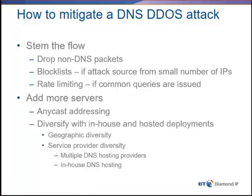Another thing you can do is diversify. If you're using Anycast, deploy servers in different geographies — different regions of the world. Also consider service provider diversity: if you're using a DNS hosting provider, use a different one in addition as a backup. In this case, one hosting provider was attacked while others were still available. You may also want to supplement with in-house DNS hosting — stand up your own DNS servers within your DMZs, configure and secure them appropriately — either as your primary with a service provider as secondary, or as a backup. If the service provider gets attacked, you're able to still resolve using your own name servers.